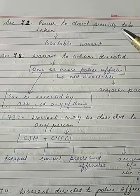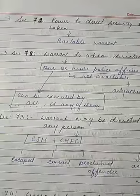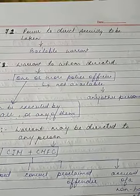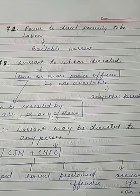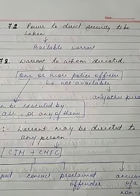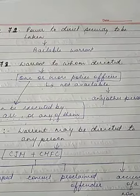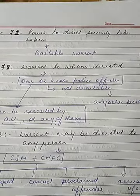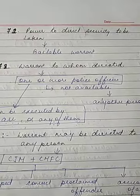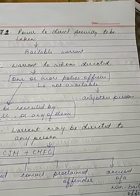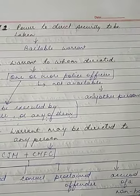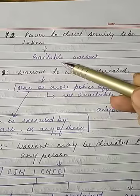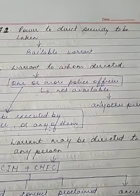Section 71 deals with the power to direct security to be taken. Any court issuing a warrant to arrest any person may allow that person to be released on providing a specific bond or a sufficient amount of surety, on the basis that when the court directs that person to attend or be present in court, he will do so. But this only happens in bailable warrant cases.